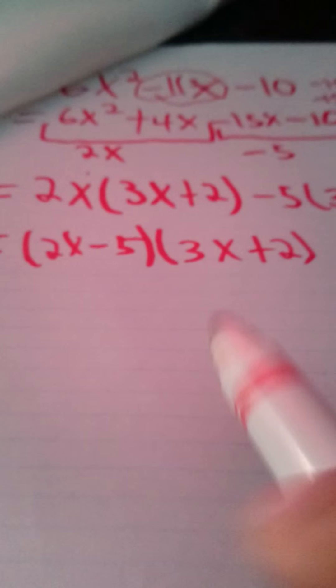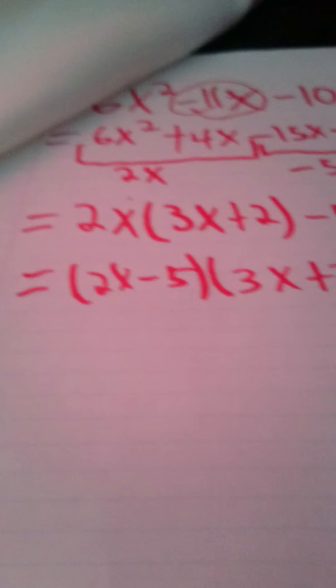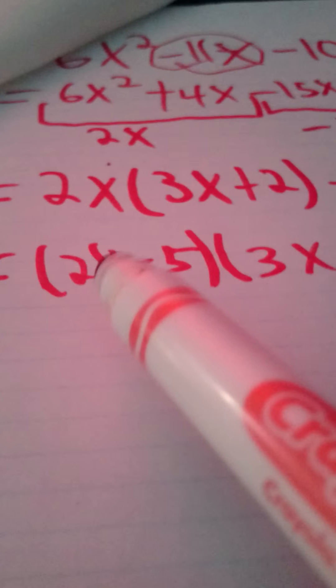So, what you will do in your next step is create 2x and negative 5 in their own bracket, giving you the factored form.